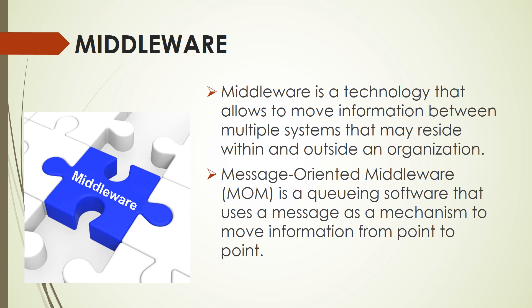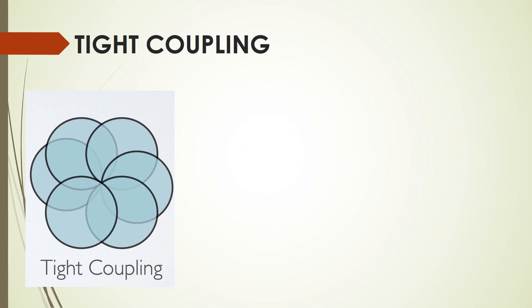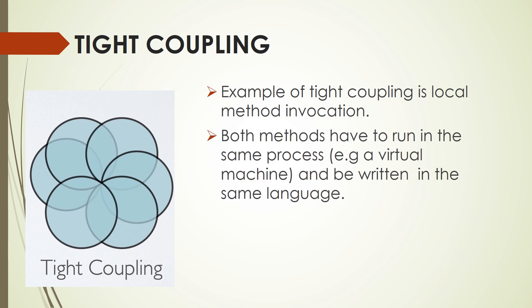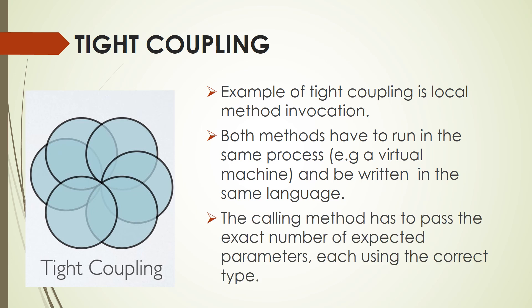So what about tight coupling? A great example of tight coupling is a local method invocation. Invoking a local method inside an application is based on a lot of assumptions between the called and calling routines. Both methods have to run in the same process — for example, in a virtual machine — and be written in the same language or at least use a common intermediate language or bytecode. The calling method has to pass the exact number of expected parameters, each using the correct type.